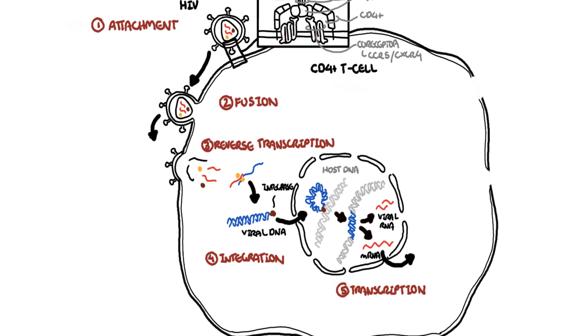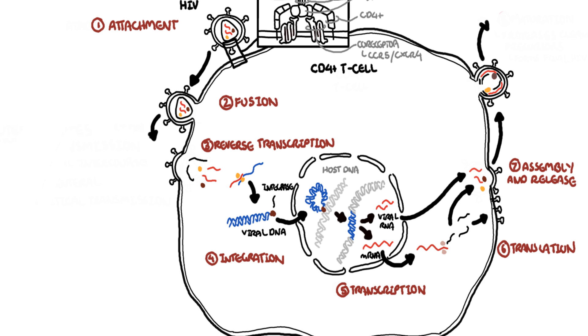Translation is where the mRNA that was just made is read by the host's ribosomes to create proteins that will essentially create the enzymes and other proteins required to make a new HIV virus. All these enzymes, proteins, and the viral RNA that is created gets assembled, packaged up, and released by the CD4 T cell.